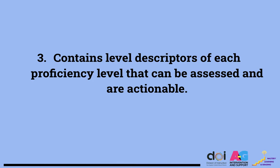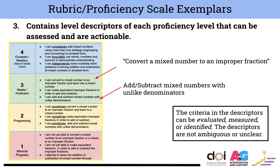Contains level descriptors of each proficiency level that can be assessed and are actionable. The sample shown here is a four-leveled rubric going from exceeds to minimal progress. When we look closer at the descriptors, what we like is that the teacher is being very specific in what they're looking for in order for a student to meet the corresponding proficiency level. For example, in order for the student to be at a three, they need to be able to convert a mixed number to an improper fraction and add or subtract mixed numbers with unlike denominators. These criteria in the descriptors can be evaluated, measured, and identified — they are not open for interpretation and are not unclear.